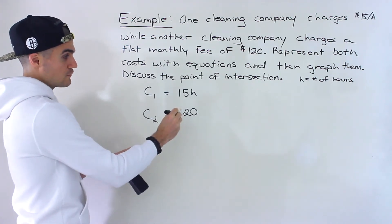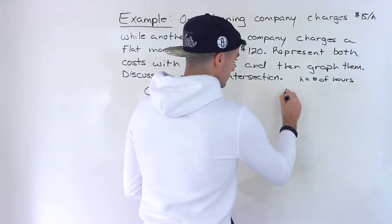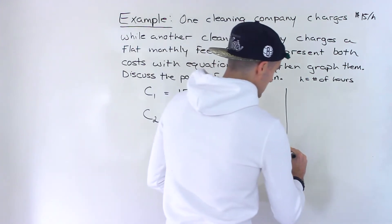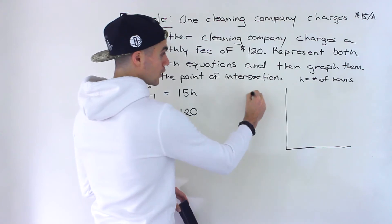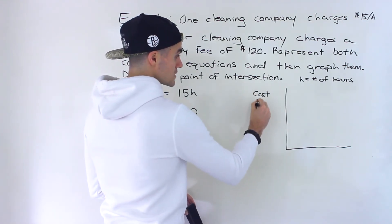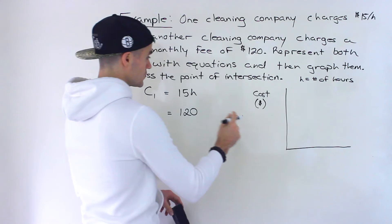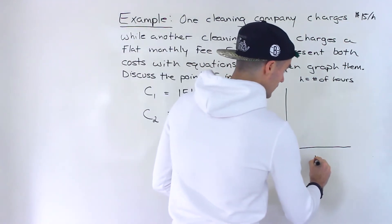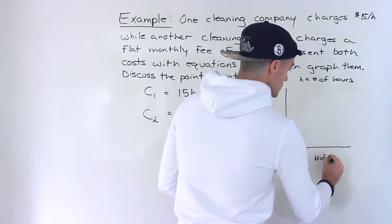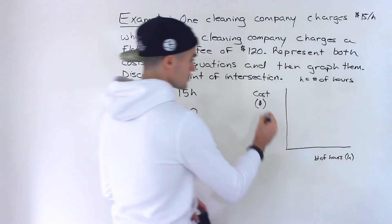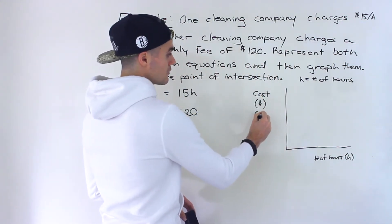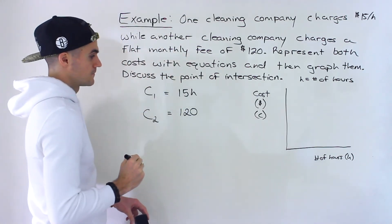Now, if we were to graph both of these, what is the dependent variable going to be? Well, the cost, which is in dollars, is going to depend on the number of hours. And that's going to be H. So this here is going to be the variable C.